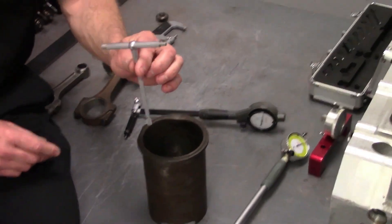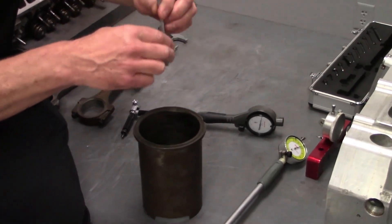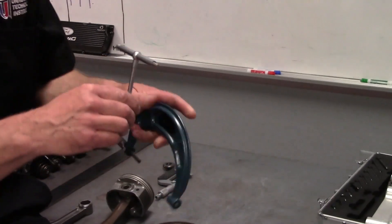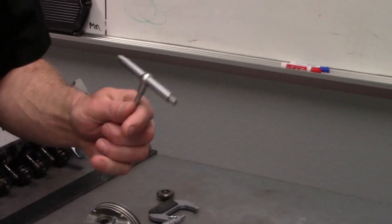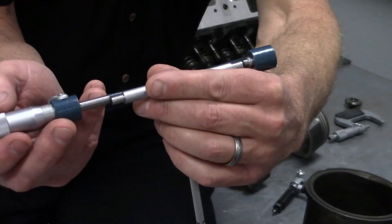We can't really read this gauge, so what we do is we take the appropriate micrometer. In this case it's a four to five, so we're just going to barely go in.